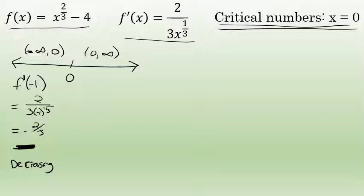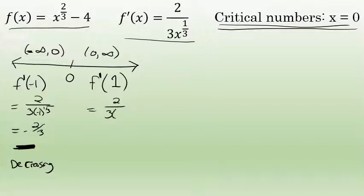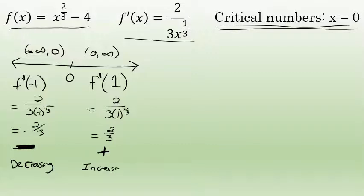Between zero and infinity I can choose any number — I'll choose one because it's easy to work with. I substitute that value into the first derivative, again just wanting to know if it's positive or negative. One to the one-third power — the cube root of one — is just one, so f'(1) = 2/3. It's positive, which means that over the interval from zero to infinity this function is continually increasing.